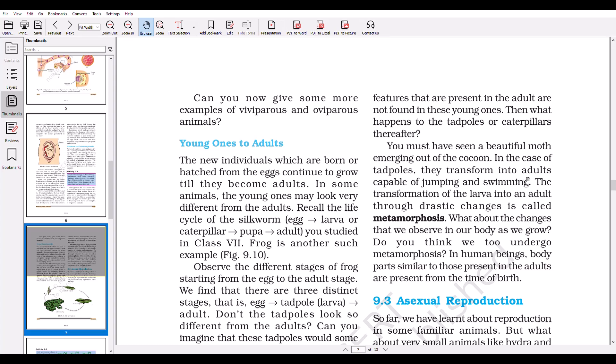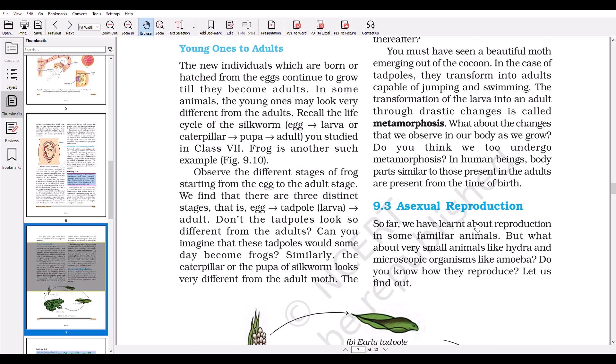In the case of tadpoles, they transform into adults capable of jumping and swimming. The transformation of the larva into an adult through drastic changes—this process is known as metamorphosis. In human beings, body parts similar to those present in adults are present from the time of birth, so we don't see such drastic metamorphosis in human beings.